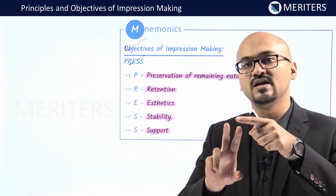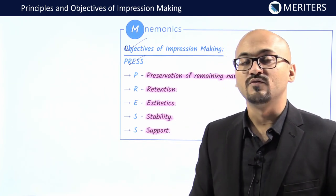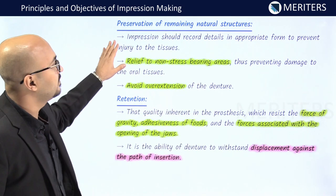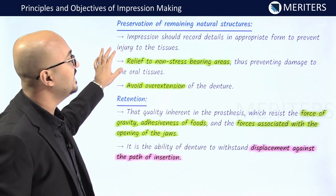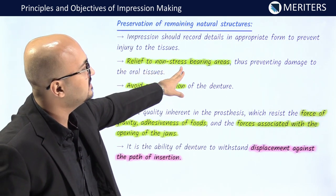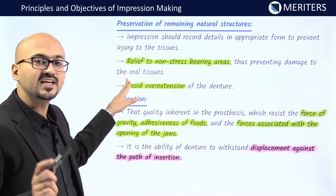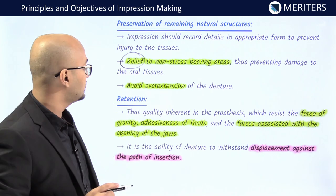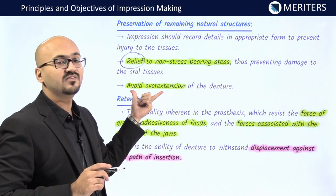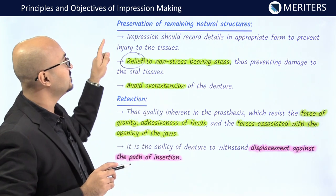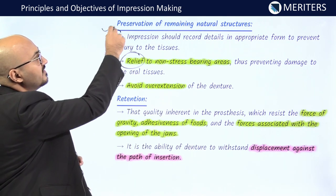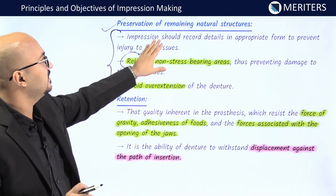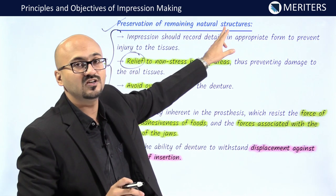Starting with preservation of remaining natural structures: the impression should record details in appropriate form to prevent any injury to existing tissues. Relief should be provided to non-stress-bearing areas to prevent damage to oral tissue. Areas that are limiting or relief areas should be provided adequate relief because they cannot take up stress. Overextension of the denture should be avoided. Limiting areas are very important in determining the extension of the denture base. You do not want to harm existing structures at the cost of making a new prosthesis.